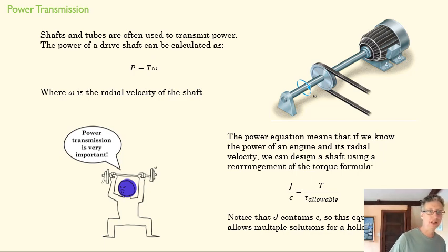Now this means that if we know the power of an engine and we know its radial velocity, we can design a shaft using a rearrangement of the torque formula. So we know what that T_max is. But if we know power and we know its velocity, that allows us to solve for torque. This is geometry, this is geometry, and then we're able to solve for an allowable stress.